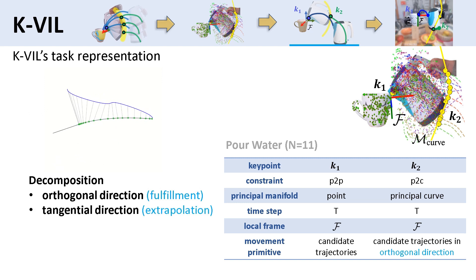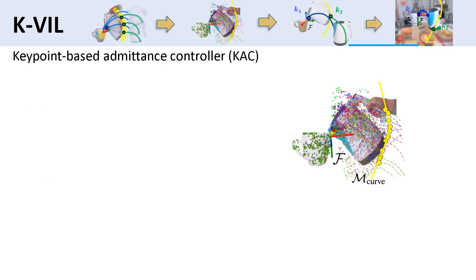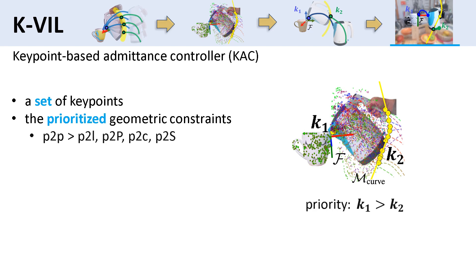While following the manifold, we allow extrapolation but also control the keypoint as close to the demonstrated target as possible. Therefore, this decomposition balances the imitation and extrapolation. We finally reproduce the tasks on the robot using a keypoint-based admittance controller. It handles a set of keypoints and assigns higher priority to a point-to-point constraint, as it is more restrictive than the others. And for multiple point-to-point constraints, K1 is usually the contact point and has higher priority.